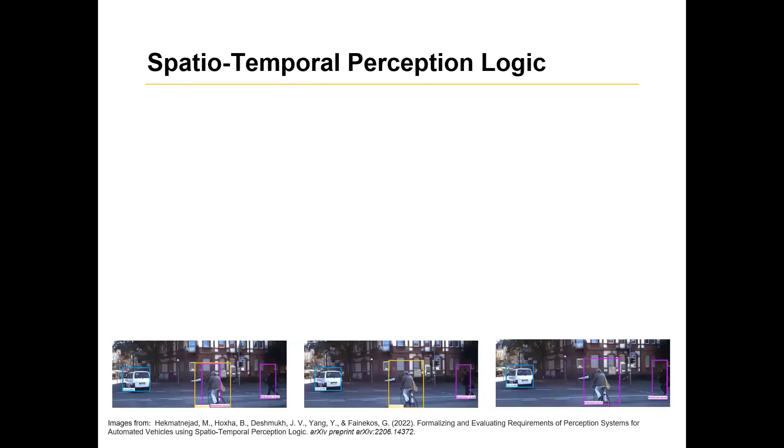And that's where the authors come up with something called the spatiotemporal perception logic. Now what spatiotemporal perception logic does is that it deals with videos. So you have a perception module, you have videos, you do object tracking, you do object estimation, you keep track of everything that's happening. And then say, how safely has my perception model performed over the videos?